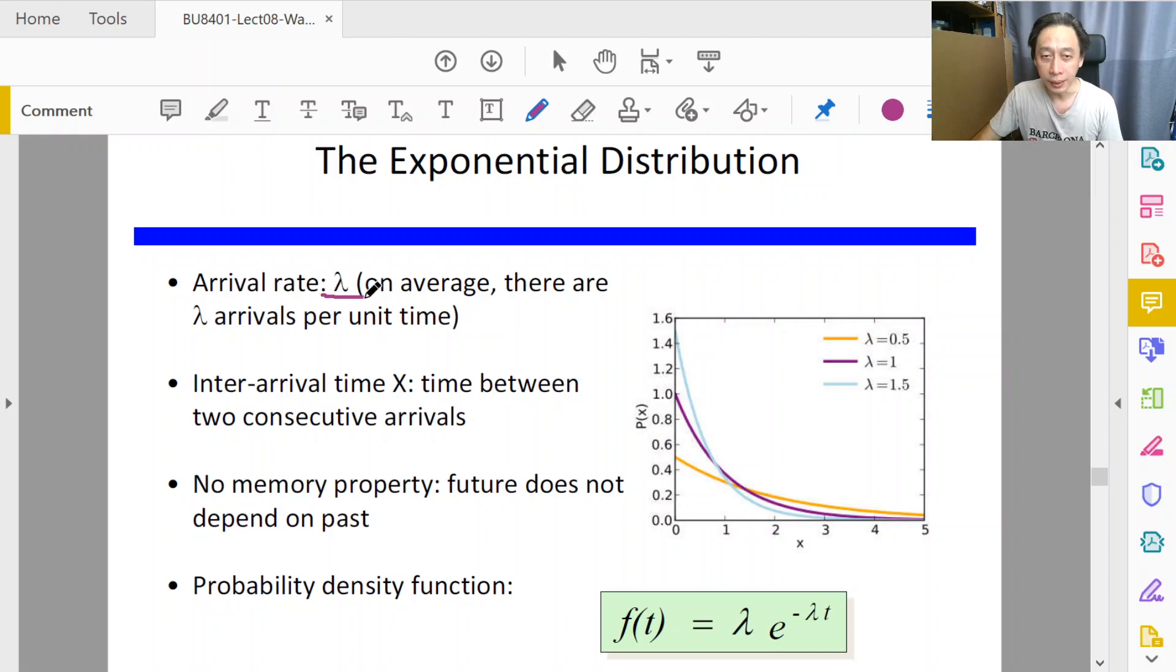We're talking about the inter-arrival time—let's call it random variable X—and that variable measuring the inter-arrival time is assumed to have exponential distribution. Then it will look like one of these curves depending on lambda, where the mean will be one over lambda.